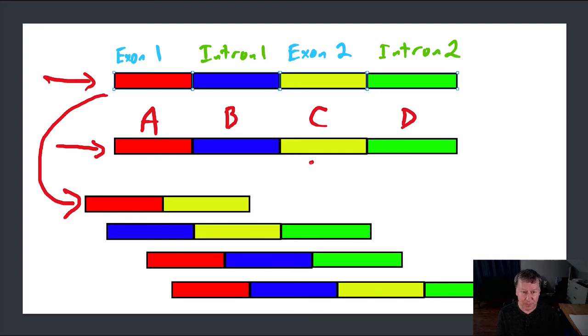So for example, I can do exactly what I did above. I can say A and C are exons, B and D are introns, in which case, I will remove those, and I will produce this protein.